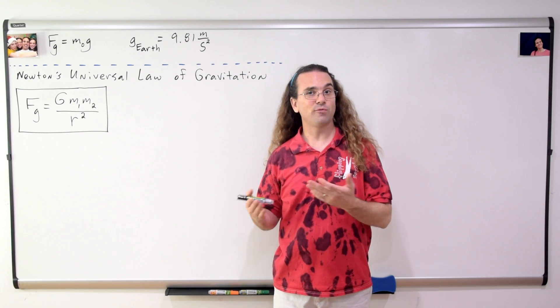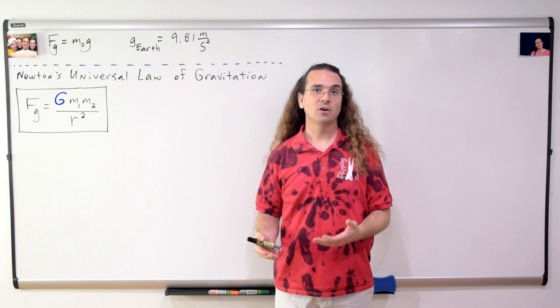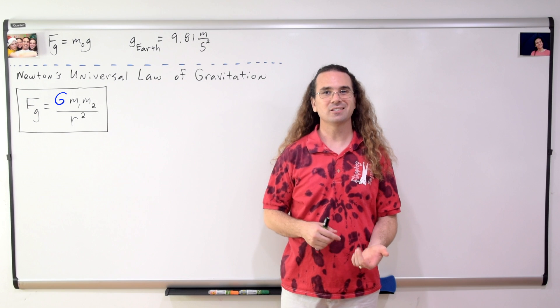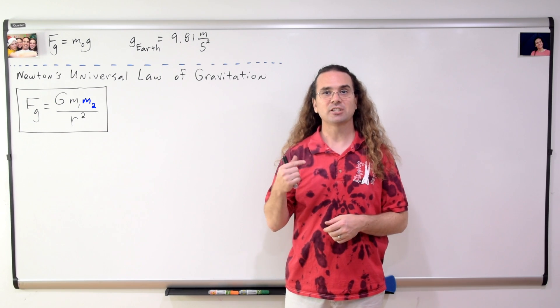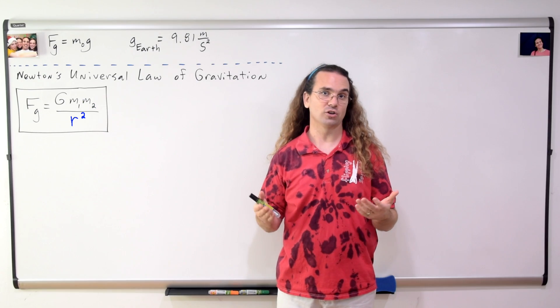And the equation is the force of gravity equals big G, or the universal gravitational constant, times the mass of object 1, times the mass of object 2, all divided by r squared.